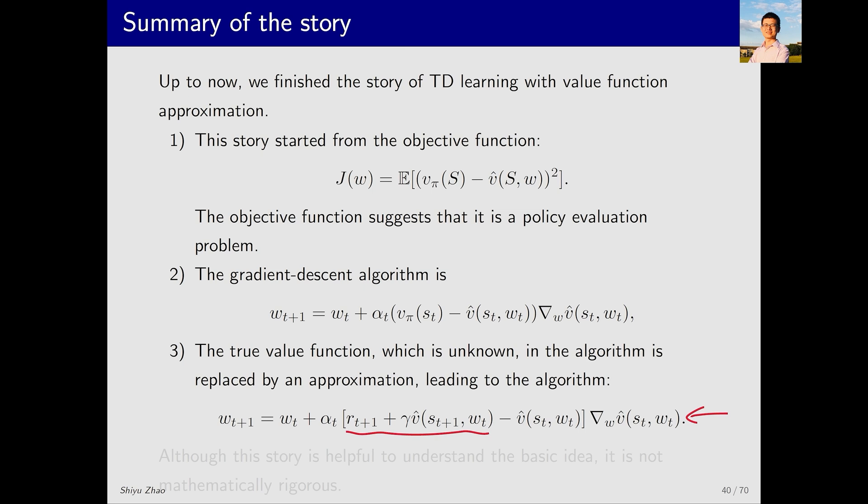What information do I want to convey here? This story is very intuitive and can help you easily understand the fundamental idea. However, it's not mathematically rigorous. Why? Because I made a substitution here, and this substitution might be problematic. Strictly speaking, this algorithm isn't strictly minimizing the original objective function, but rather another objective function. I will talk about this later in this lecture. While it is not rigorous, why do I use this storyline to introduce value function methods? That is because if I didn't use this storyline, the problem would become much more complex. I would either have to directly present the algorithm or the objective function that the algorithm actually optimizes, both of which are very complicated. So for most readers, it's already sufficient to grasp this storyline. If you're particularly interested in the storyline that is more rigorous, you can refer to my book for the theoretical analysis.